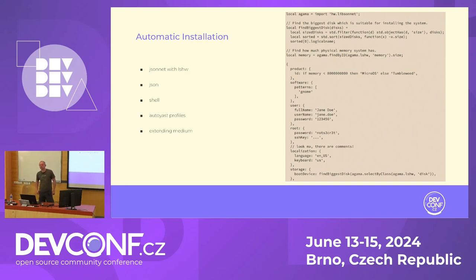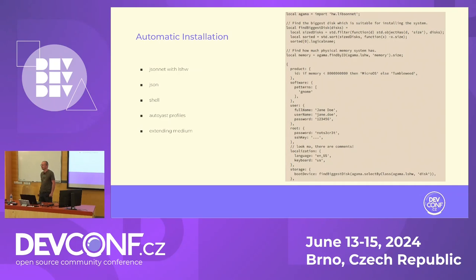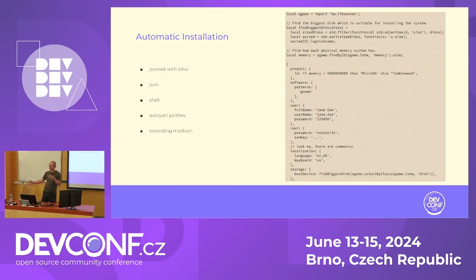We also have partial support for AutoYaST profiles. Users and customers hate when we break things that have worked for ages. They have AutoYaST profiles that install machines — sometimes very large and complex ones. It takes time to adapt to new solutions, so we try to support as much as possible of old AutoYaST profiles in Agama. Customers can just pass their old profile and we try to get as much as possible from it.